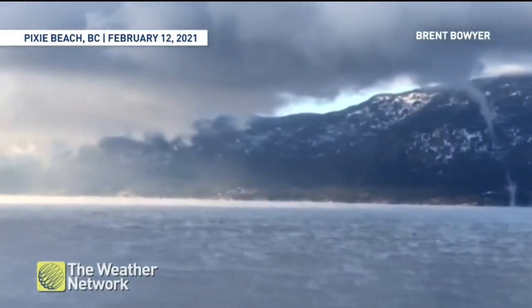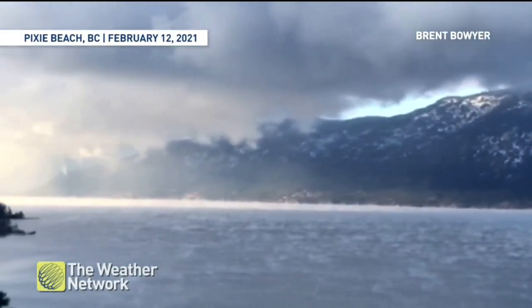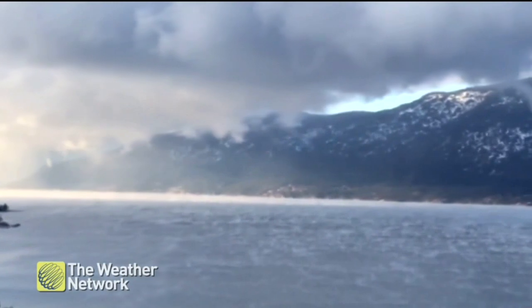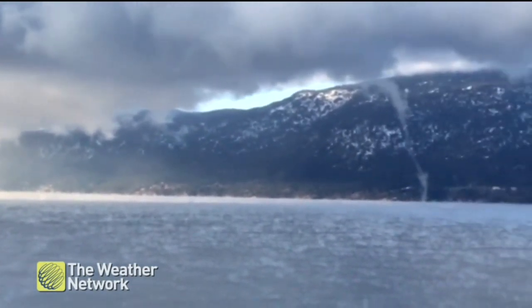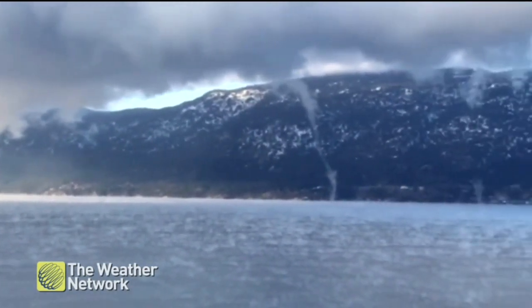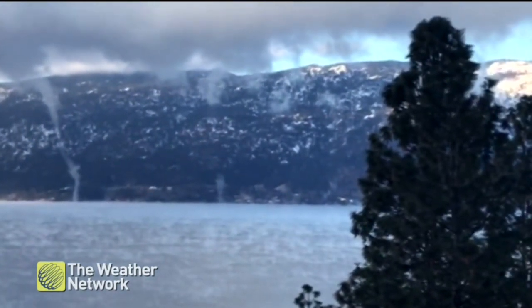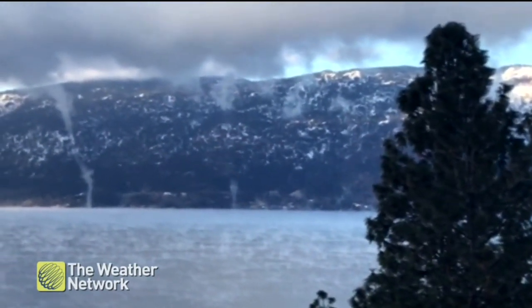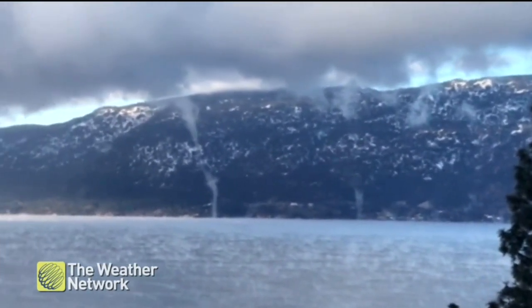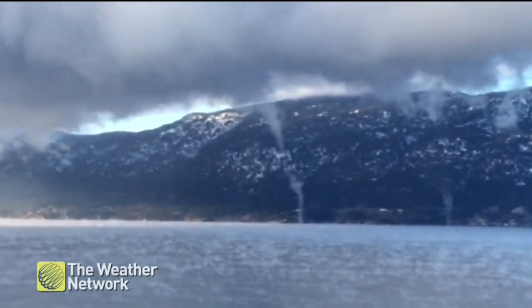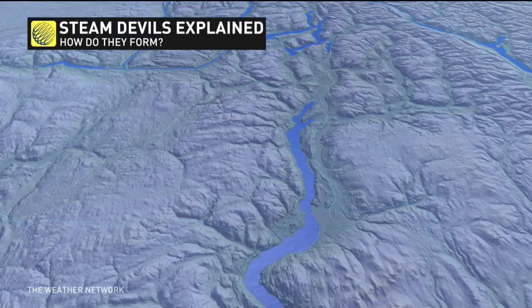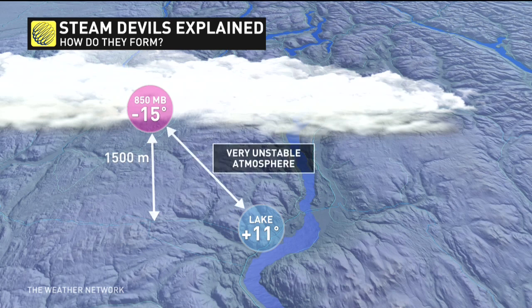Check this out — we'll take you back to February 12th, Pixie Beach, BC. This is Okanagan Lake, and you can see many reports — even a few right here in this video — of what we call steam devils. Steam devils usually happen during the coldest air of the season. In BC's case, it's when we get those arctic outflow types of events. Over the Great Lakes in the dead of winter, you'll see steam devils over the Great Lakes.